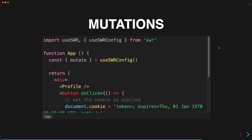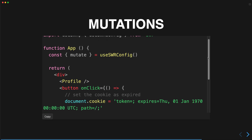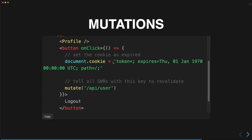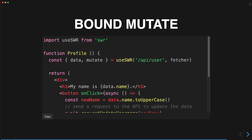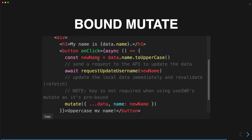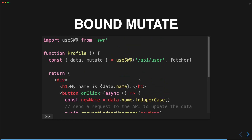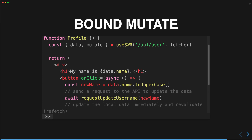If you want to update some state on the server and have it reflected in the UI, there's a feature called mutations. Using useSWRConfig gives you a mutate function — for example, a button that changes a cookie can call mutate on a specific key to revalidate and update the UI. There's also bound mutate, where useSWR itself returns a mutate function already bound to that hook's key, so you don't need to pass the key in separately.